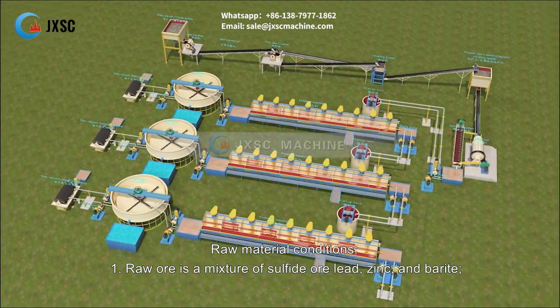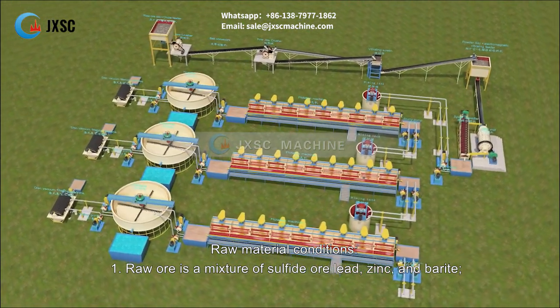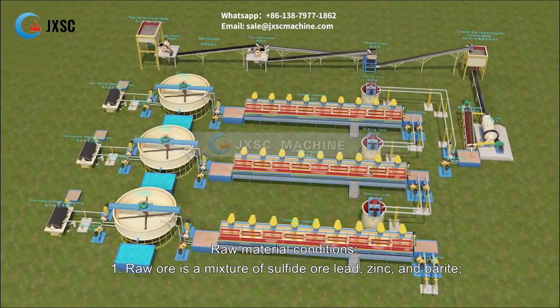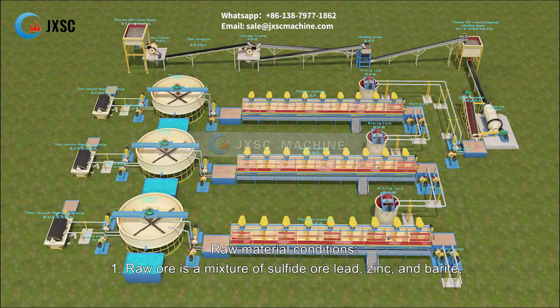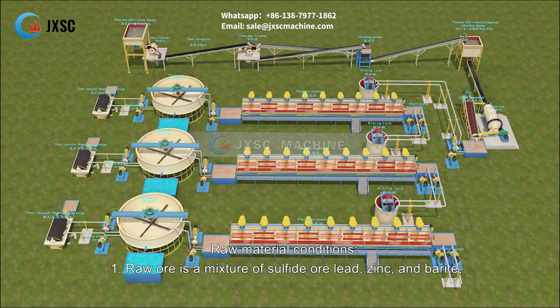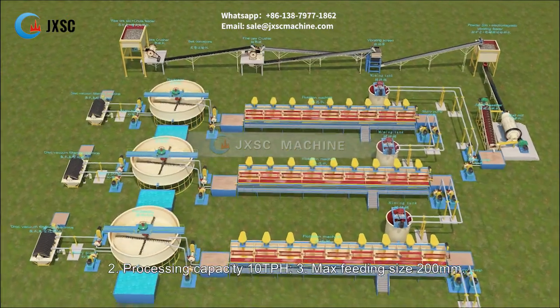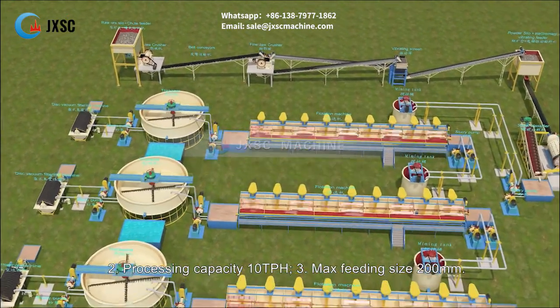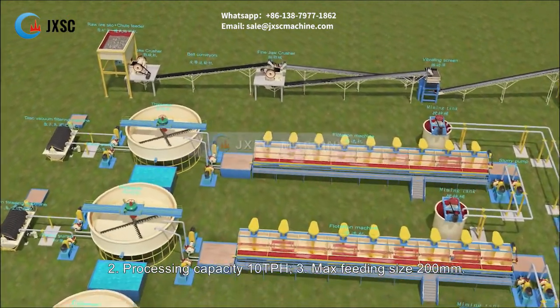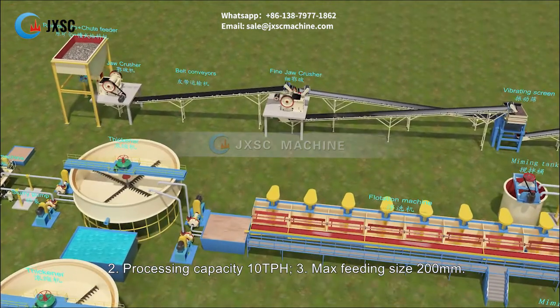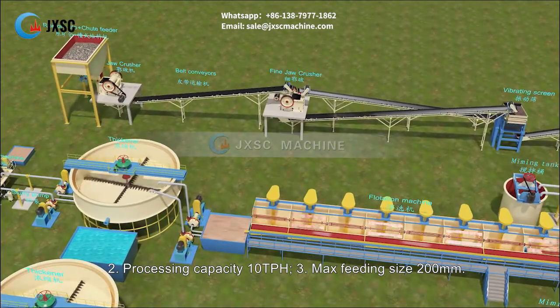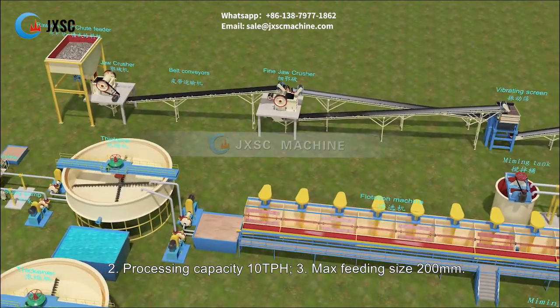Raw material conditions: Raw ore is a mixture of sulfide ore — lead, zinc, and barite. Processing capacity is 10 tph. Maximum feeding size is 200 mm.